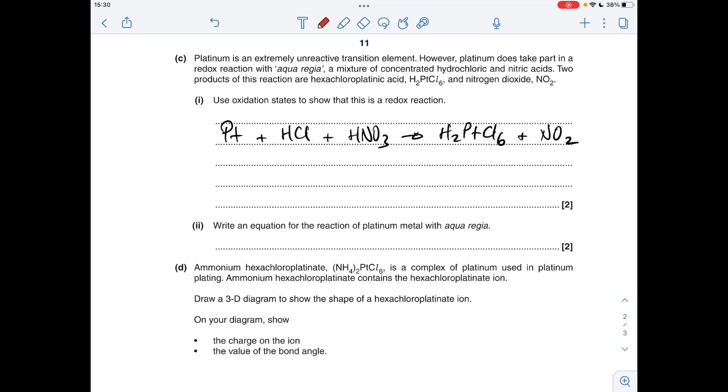So if we start with platinum, in its element form, it's obviously got an oxidation state of zero. And if we look at when it goes to this H2PtCl6, so we've got 6 times minus 1 from those 6 chlorides, 6 times minus 1. We've got 2 times plus 1 for the 2 hydrogens. So what's the platinum got to be to keep this neutral? It's got to be plus 4. So that's an oxidation process, because platinum's oxidation number's gone from zero. It's increased to plus 4.